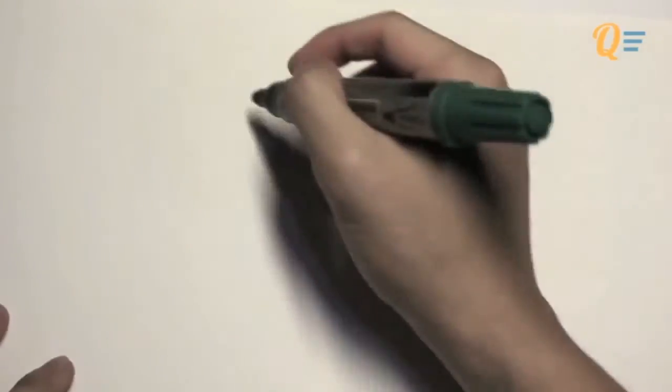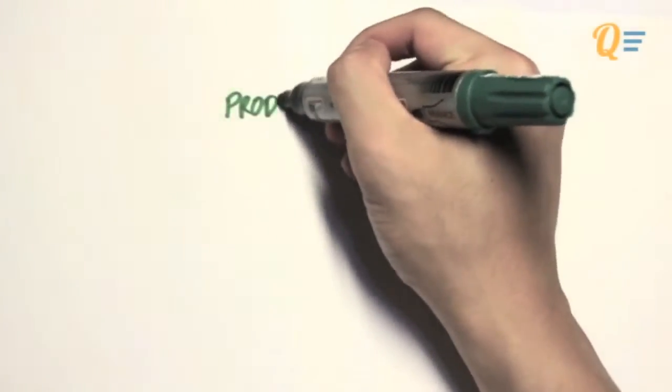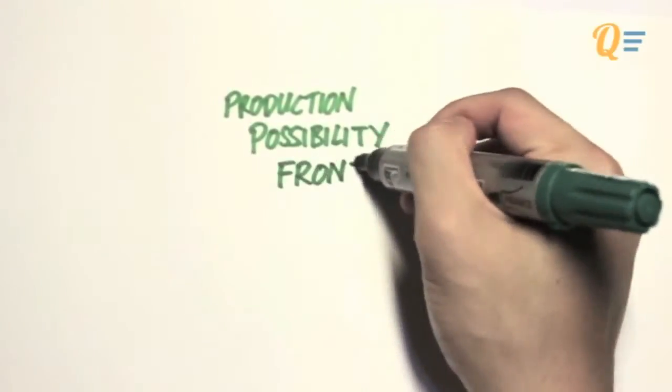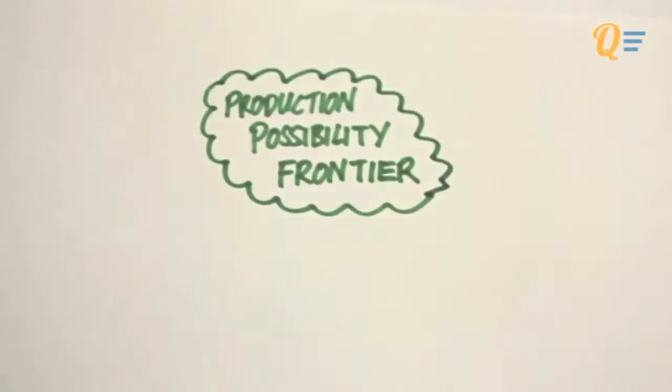A warm welcome to the first chapter of introduction to economics. Today we will be talking about the production possibility frontier, or what we like to call the PPF.